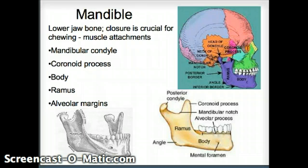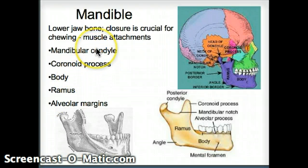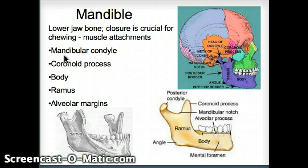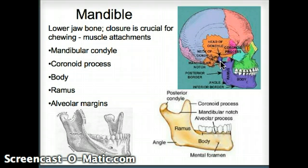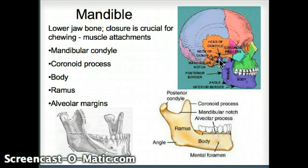The mandible is the lower jawbone. This is crucial for chewing, so there are important muscle attachments here. There's also a joint that forms: the mandibular condyle, which is right up in the back, forms a joint with the mandibular fossa of the temporal bone — that's the temporomandibular joint.